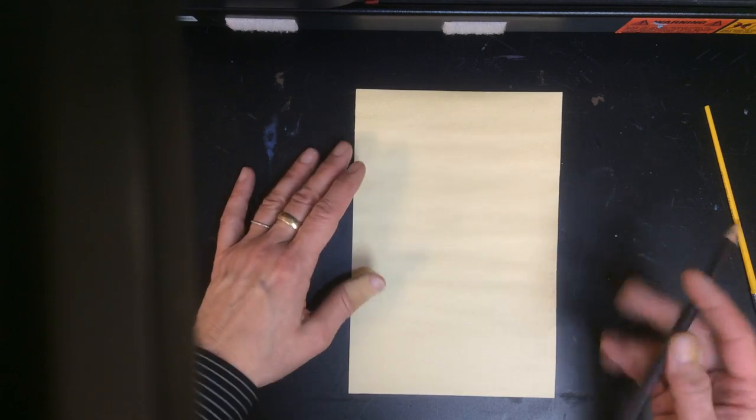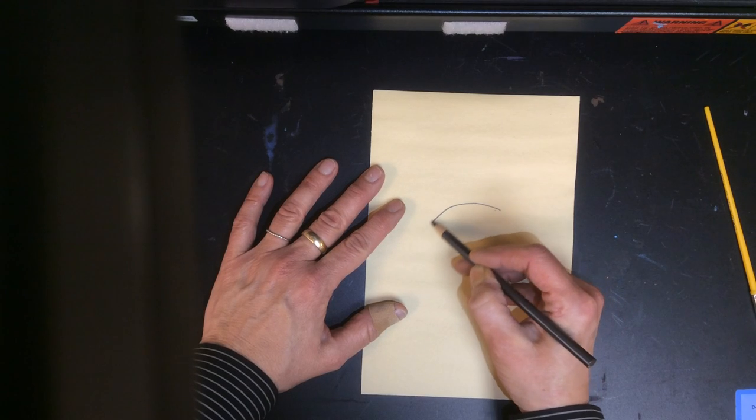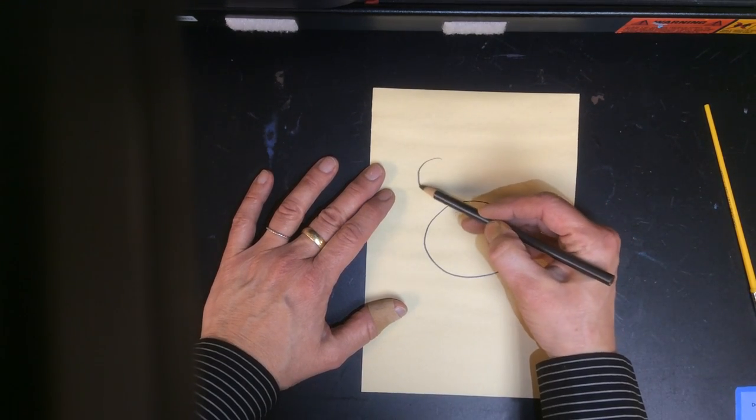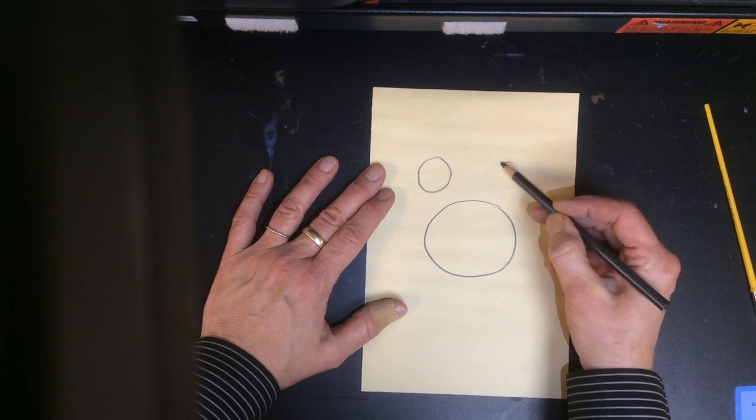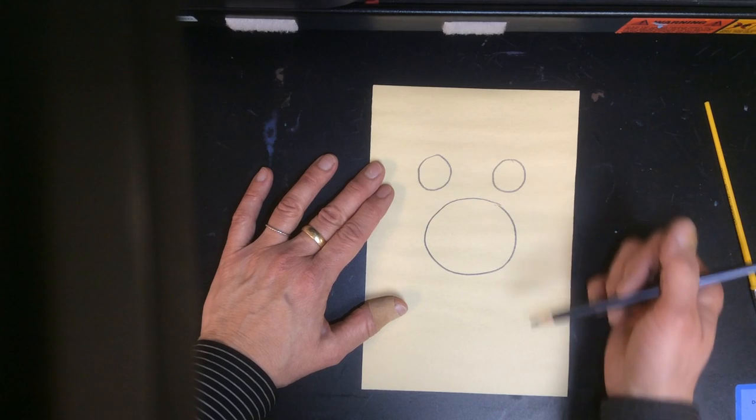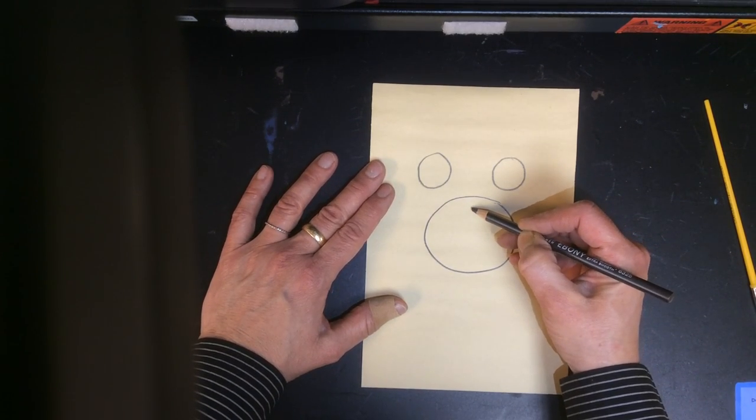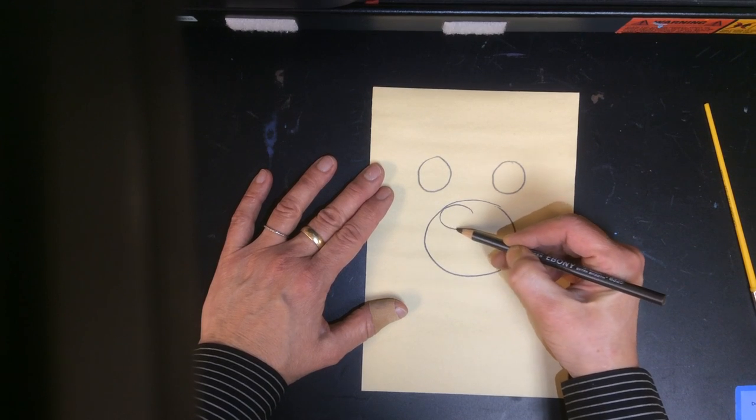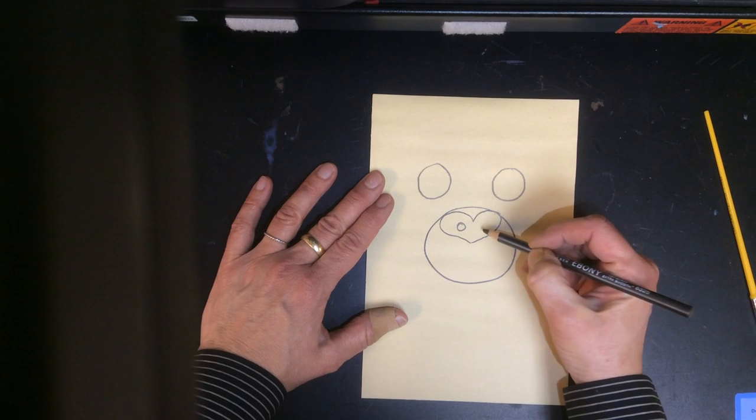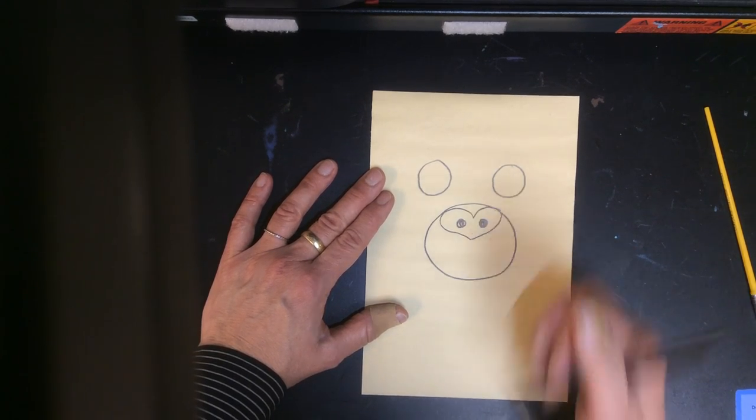To begin, we're going to draw a medium-sized circle in the center of the page and then two more smaller circles for the eyes above the bottom circle. Inside of this circle, we're going to draw kind of a flattened heart shape and that is for our monkey's nose. We're going to go ahead and put two nostrils in there.